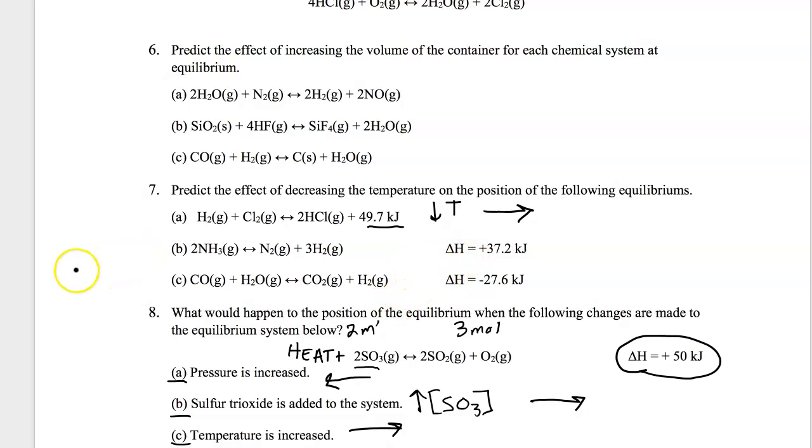For B, it's endothermic. So heat is a reactant. If we lower the temperature, the only way to create heat is to go to the left, because heat is a reactant. So if we have products turning back into reactants, that will generate more heat. So for this one, it's going to go left.